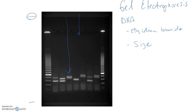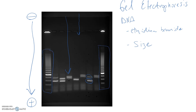This gel is set up so that an electric current flows through it, with a negative electrode and a positive electrode. Because the sugar-phosphate backbone of DNA carries a negative charge, opposites attract, so the DNA is pulled toward the positive electrode. Based on size, smaller pieces move faster than larger pieces. Loaded on both ends of the gel is a DNA ladder — pieces of DNA of known size — so you can compare your test samples against the ladder to determine the size of your bands.